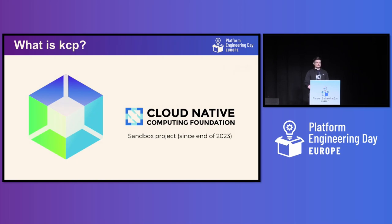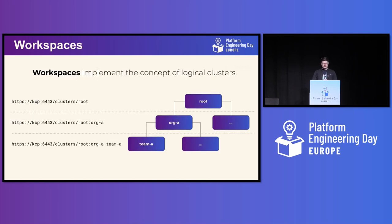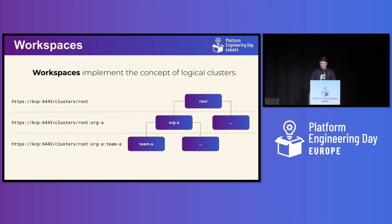The idea behind KCP: logical clusters are implemented as something we call workspaces. Workspaces are your way in KCP to instantiate new logical clusters. Workspaces are actually Kubernetes resources, and if you want to create a new logical cluster — a new Kubernetes API server — you just tell your Kubernetes API to create a new workspace. Workspaces have two characteristics: first, they are organized in a hierarchy. You can see this on screen — you have a tree structure where you take your organization's structure and apply it with workspaces, because you can nest them into each other.